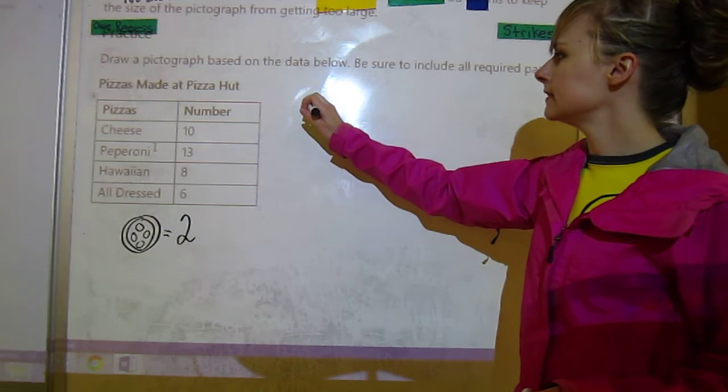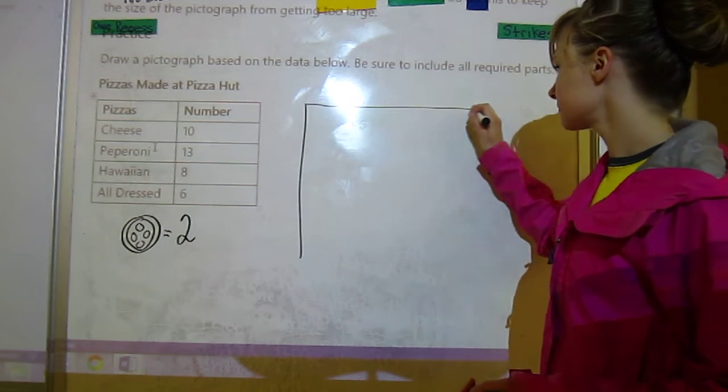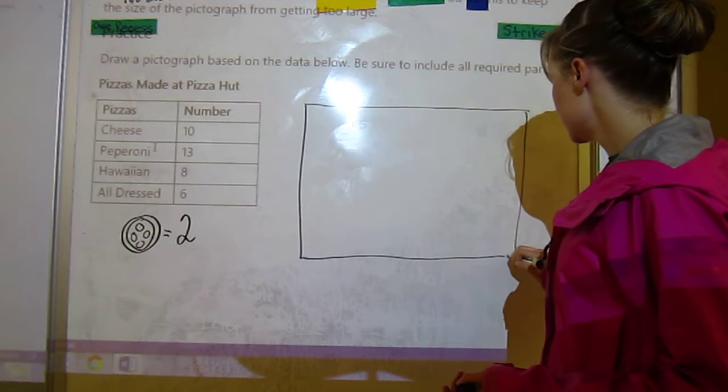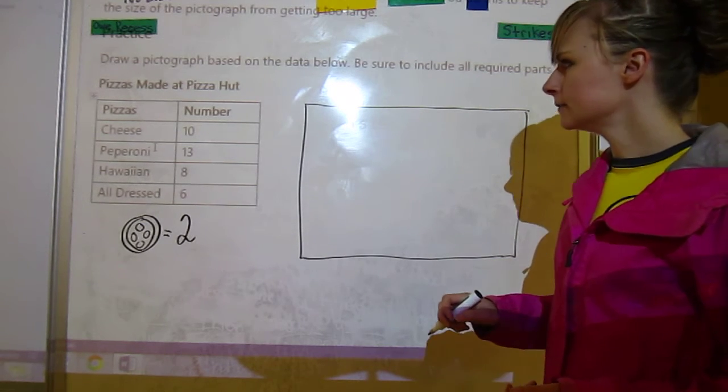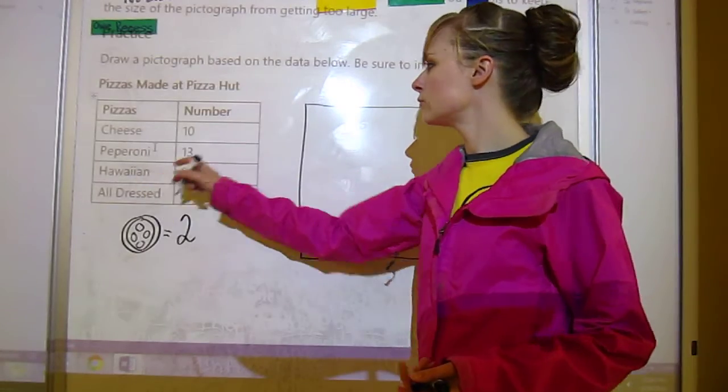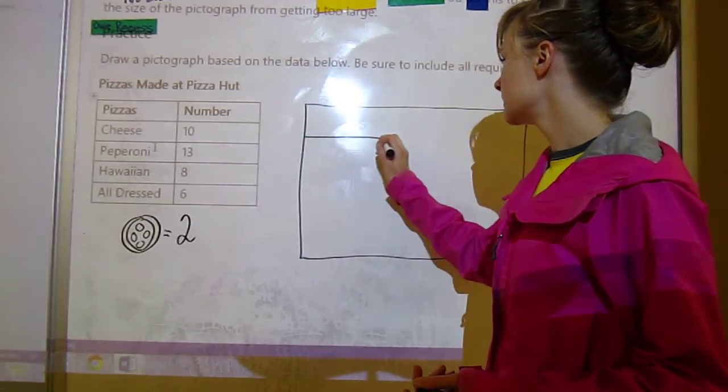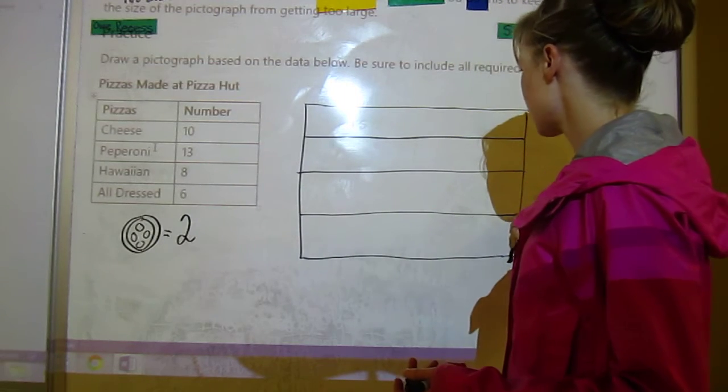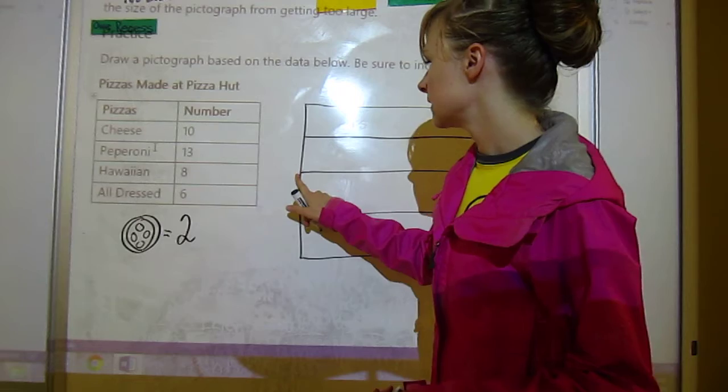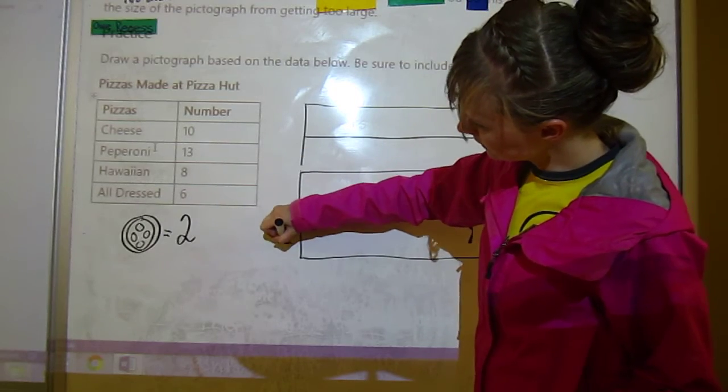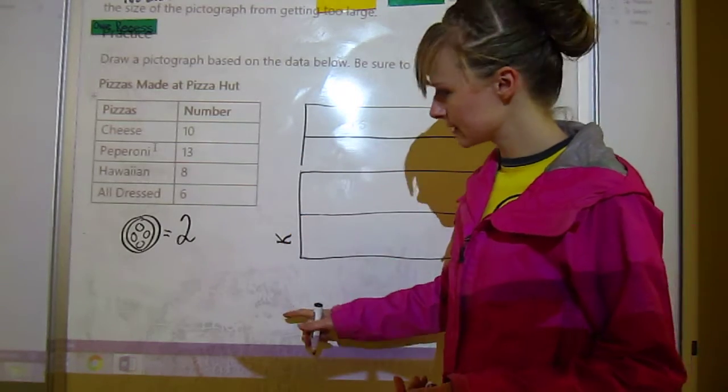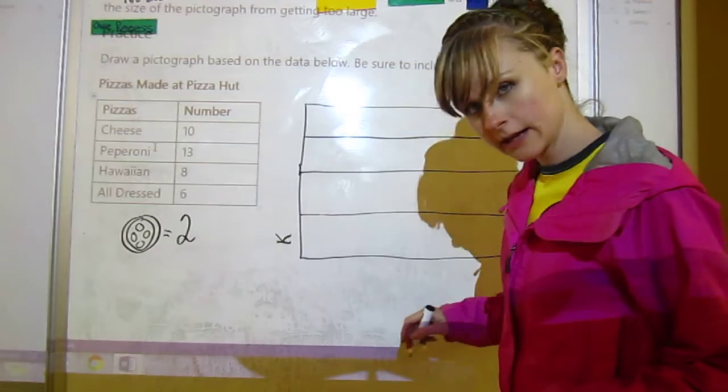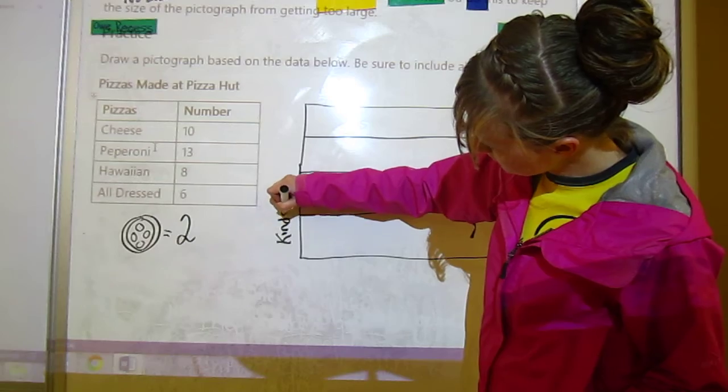The first thing that we need to do is draw our graph. We usually start with a rectangle and then we have one, two, three, four kinds, so we can draw three lines but four sections. Now we can put the label - this is the vertical axis label. This is an axis and it is vertical. This would be a horizontal axis, but we can put kinds of pizza here.